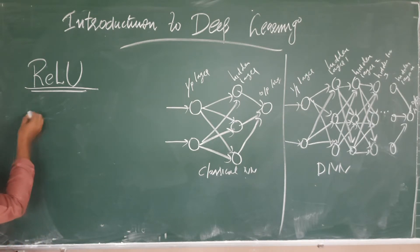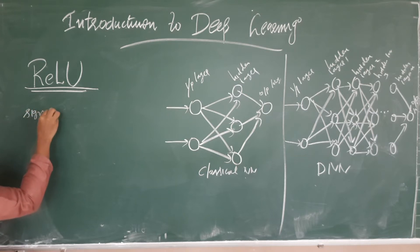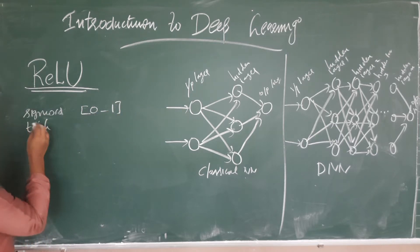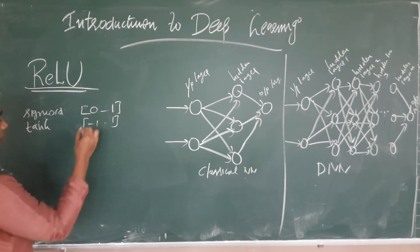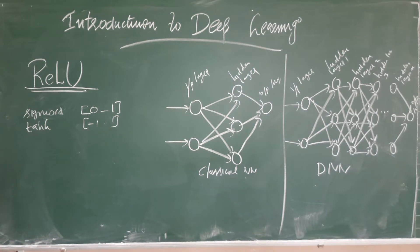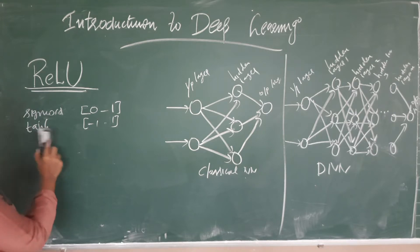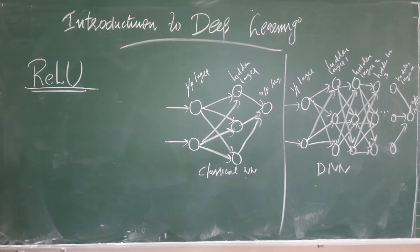The reason ReLU is preferred is that other commonly used activation functions like sigmoid have a range of 0 to 1, and the tanh activation function has a range of -1 to 1. These ranges are very small, so the gradients become very small. In a deep neural network, the gradient has to traverse back from the output layer to the input layer through many hidden layers via repeated gradient multiplication. If the gradient values are very small, the gradients will eventually vanish — this is the vanishing gradient problem.